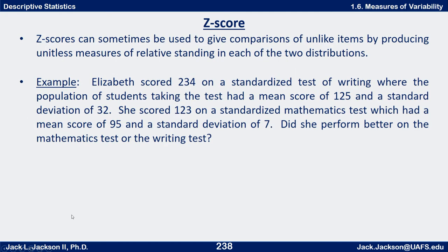Let's look at an example of how we can use z-scores to give comparisons of unlike items by producing a unitless measure of relative standing. Elizabeth scored 234 on a standardized writing test where the population had a mean score of 125 and a standard deviation of 32. She scored 123 on a standardized mathematics test which had a mean score of 95 and a standard deviation of 7. Did she perform better on the mathematics test or the writing test?